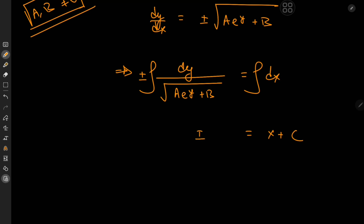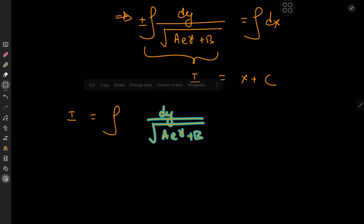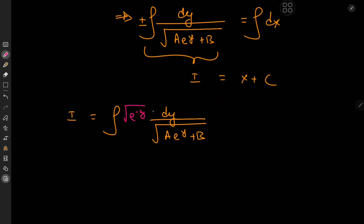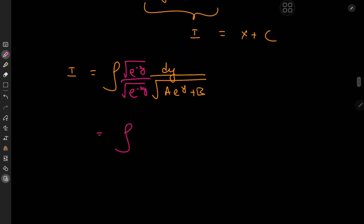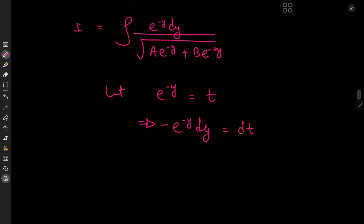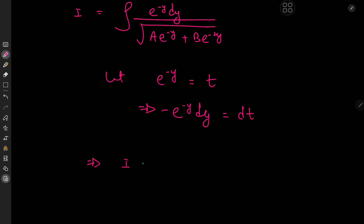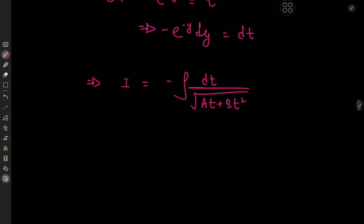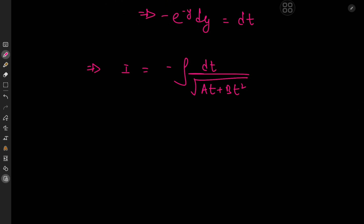Now for the integral on the left hand side, we multiply numerator and denominator by e^{-2y}. That gives us the integral of e^{-y} dy divided by √(a·e^{-y} + b·e^{-2y}). We make the substitution t = e^{-y}, so -e^{-y} dy = dt. The integral becomes I = -∫ dt / √(a·t + b·t²). Factoring out b, the argument of the square root is b(t² + (a/b)t).